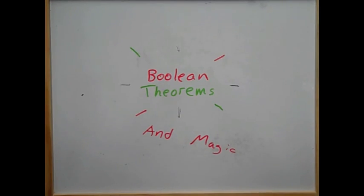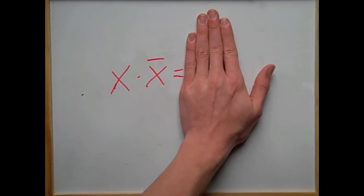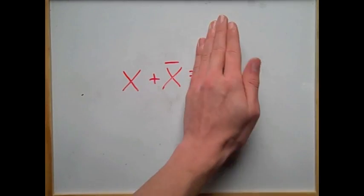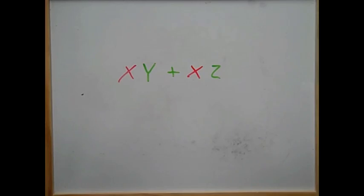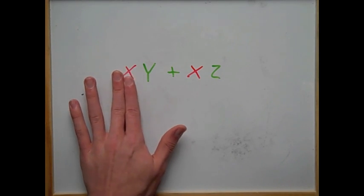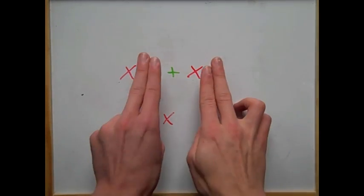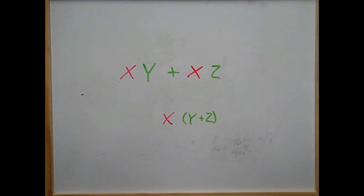So these aren't all the Boolean theorems, but these are some pretty important ones. First we have x and not x, and that equals 0. Next up, we have x or 1, and that is equal to 1. Then we have x or not x, and that equals 1. Next we have a simple distribution problem. Just like in math, we can pull x out, which is a common term between these two, and then we can change it to y or z.